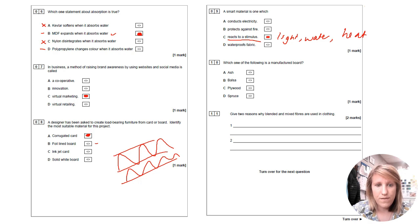Which one of the following is a manufactured board. That should be easy all day long because ash is a hardwood, bolster is a hardwood, spruce is a softwood. Plywood is your manufactured board.